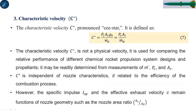Another characteristic is the characteristic velocity C*, defined as C* = Pc·AT·g₀/Ẇp, where Pc is combustion chamber pressure, AT is the throat area, and Ẇp is the propellant weight consumption per second.